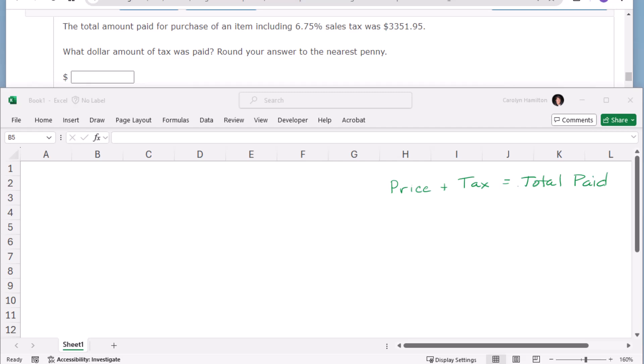Okay, so we have the selling price, but then we add tax, and then we get the total paid. But what we know is that the total paid is $3351.95. And we know that the tax percent is 6.75%. I don't know the original price. I don't know the dollars of tax.